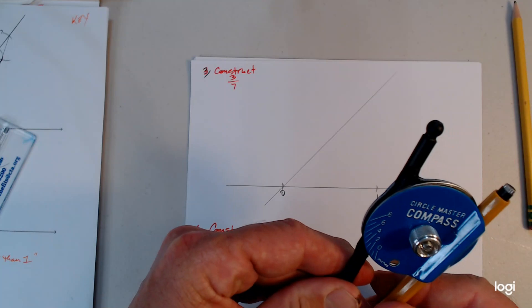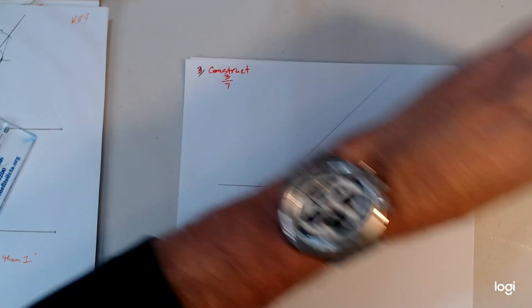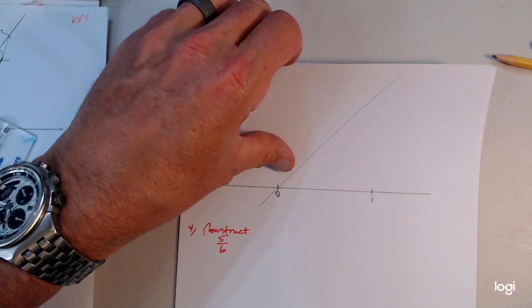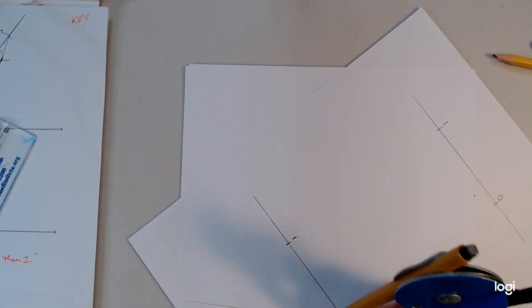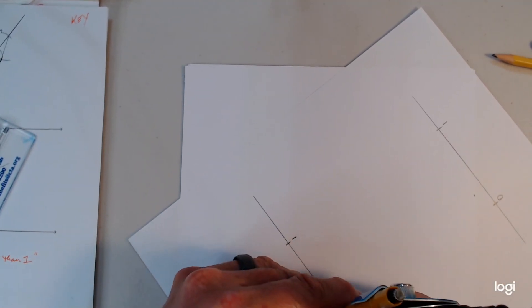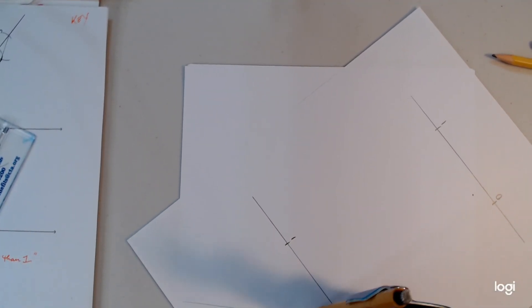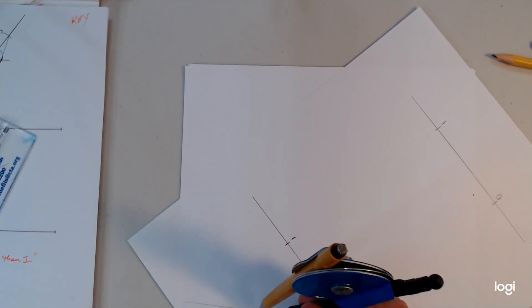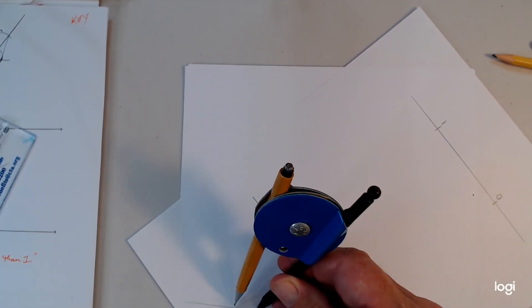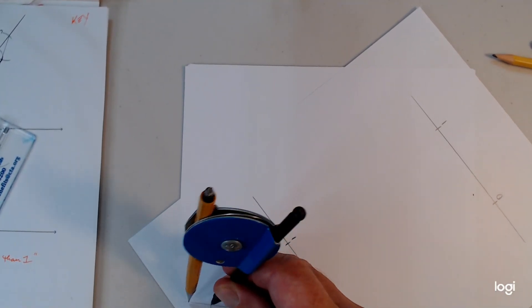On this one, you probably want to decrease the radius because you're going to have to construct seven congruent arcs. If your radius is too big, you're going to be off the page. So count: one, two, three, four, five, six, seven.